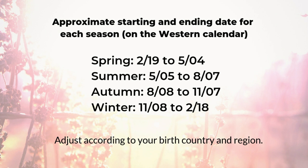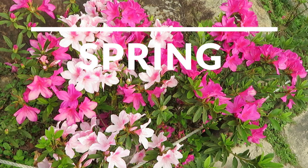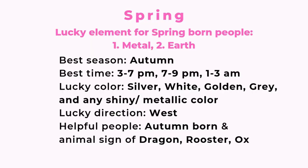You have to adjust your season according to the country where you were born. For spring: in spring there is plenty of wood energy, and the best element for spring people is metal, with earth as the second best. The favorable element is not the same as the spring element because you need something to complement your own element. The best month of the year for spring born people is autumn, from August 8th to November 7th, because autumn has a lot of metal.